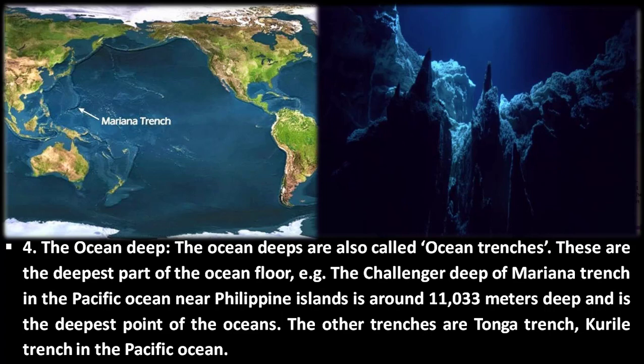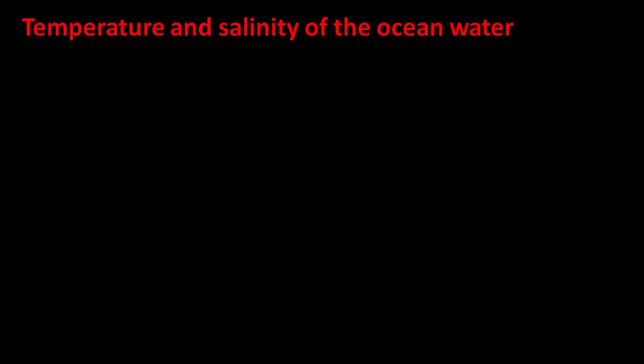The fourth part is the ocean deeps, also called ocean trenches. These are the deepest parts of the ocean floor. The Challenger Deep of the Mariana Trench in the Pacific Ocean, near the Philippine Islands, is around 11,033 meters deep and is the deepest point of the ocean. Other trenches include the Tonga Trench and the Kermadec Trench, both located in the Pacific Ocean.